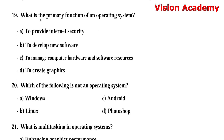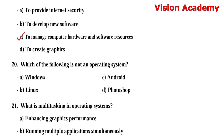Question number 19: What is the primary function of an operating system? Option A: to provide internet security. Option B: to develop new software. Option C: to manage computer hardware and software resources. Option D: to create graphics. Option C, to manage computer hardware and software resources, is the right answer.